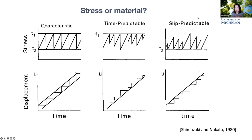People use stresses as indicators to determine when earthquakes may occur and how large the co-seismic slip is. For example, in classic earthquake cycle models like the time-predictable model, earthquakes happen at a certain yielding stress level. If we can estimate this stress level, then we can determine or predict the timing of the earthquakes.